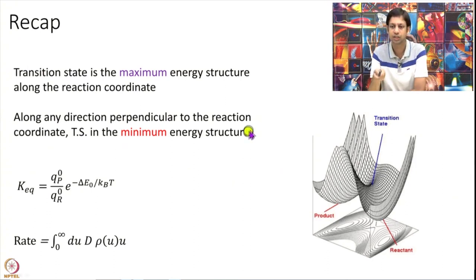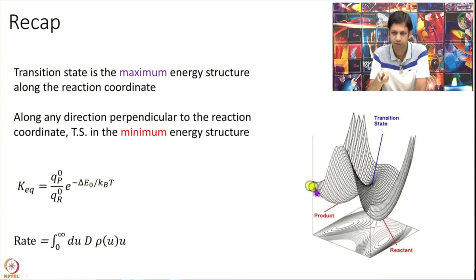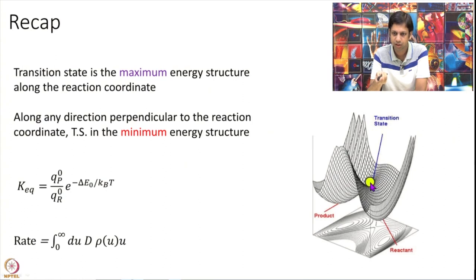A major confusion I have seen: the transition state is not the global maxima of the potential energy. On a sample potential energy surface, going from reactant to product, the maximum along that minimum energy path is the transition state — but if you draw a perpendicular line at that point, there are other points on the energy surface that are higher in energy than the transition state.